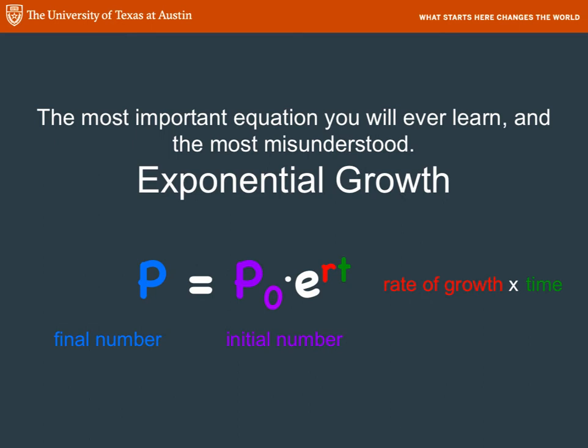This is the most important equation that you'll ever learn and the most misunderstood. It's the equation for exponential growth, and this is not the first time you've seen it — not even the first time in this class. We used the same equation for radioactive decay. And you've seen it in other classes as well.